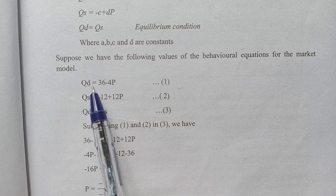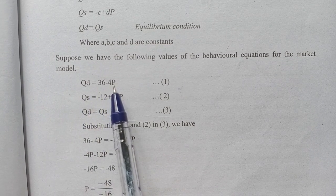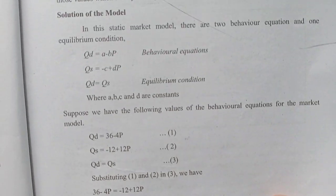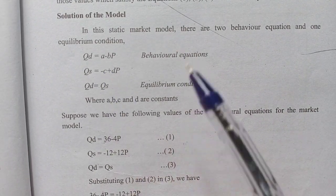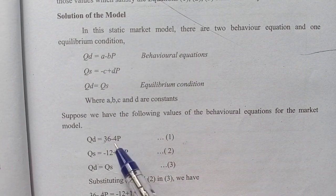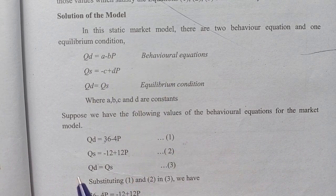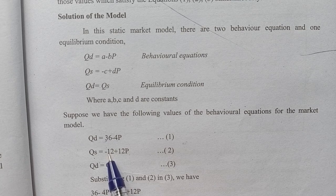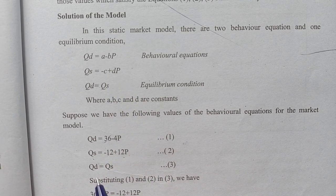Suppose we have the following values: QD is equal to 36 minus 4P, where 36 equals a and minus 4 equals minus b. QS is equal to minus c plus dP. Then QD is equal to QS.